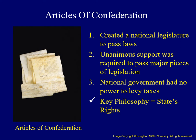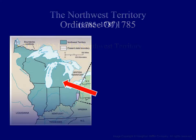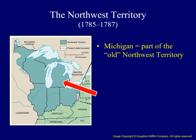While there were some shortcomings to this document, it also had many successes. The first of these was the Ordinance of 1785, which dealt with land in what was then called the Northwest Territory. The Northwest Territory encompassed what are now the states of Ohio, Indiana, Illinois, Michigan, Wisconsin, and part of Minnesota. The arrow on this map is pointing to Michigan.